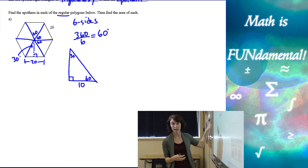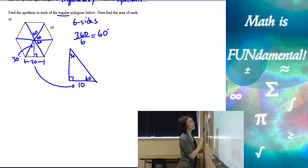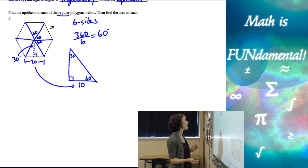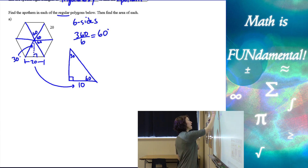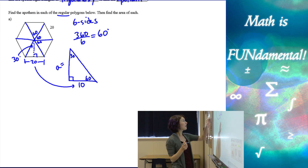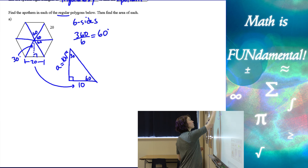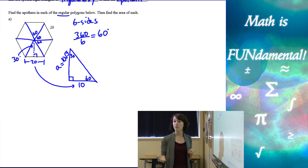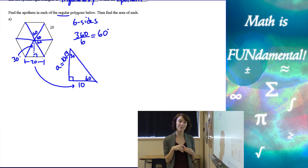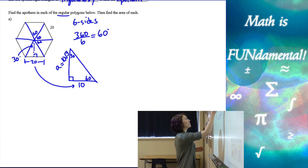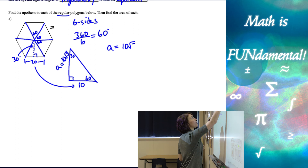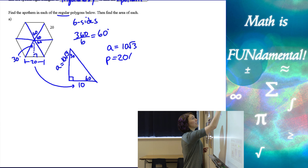I'm going to use half of one of those triangles — just the right triangle piece — to make it easier. At the top I've got 30 degrees, at the base I have 60 degrees. Because this is only half of one of those triangles in our hexagon, the base of this part of the triangle is going to be 10 — it's half of the side length. So just be careful that you really do use half of that length. Using my special right triangles to find the apothem, I know that this is going to be 10 times the square root of three.